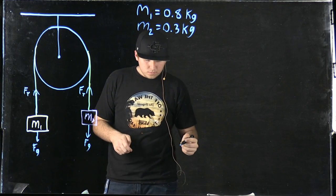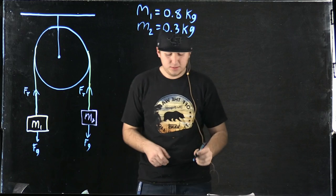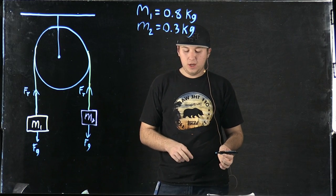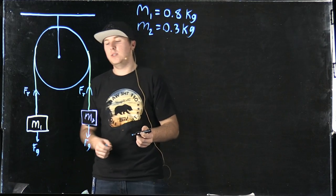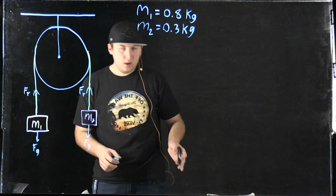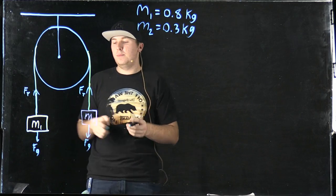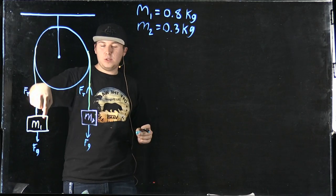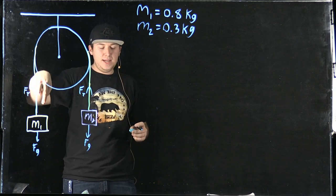The second part of the problem says define the magnitude and the direction of the acceleration for each box. To do that, we need to treat this whole thing as a system, knowing that mass 1 is heavier and it's going to pull this down.